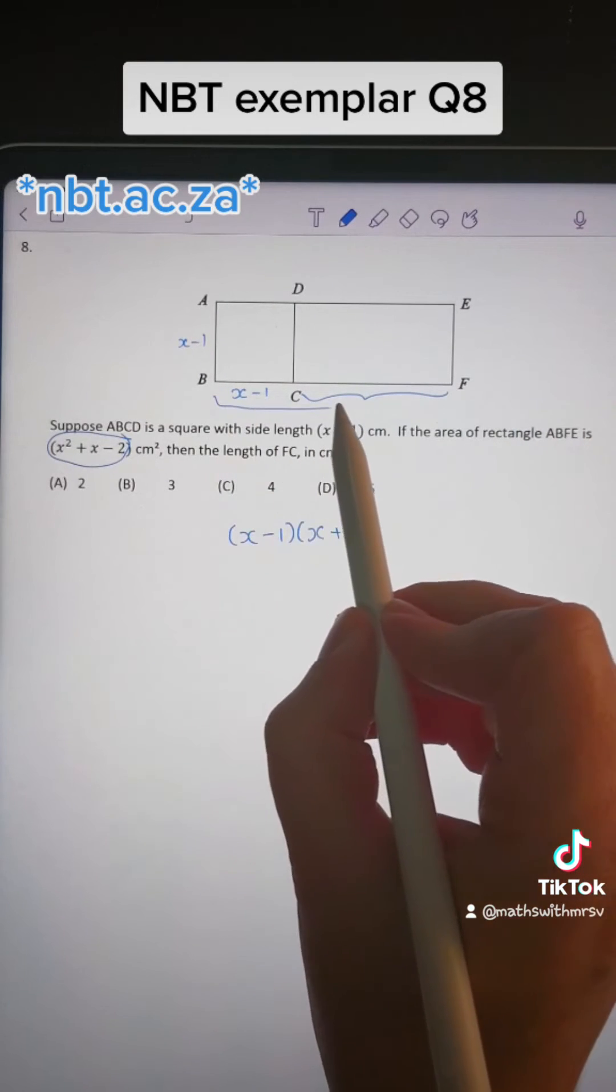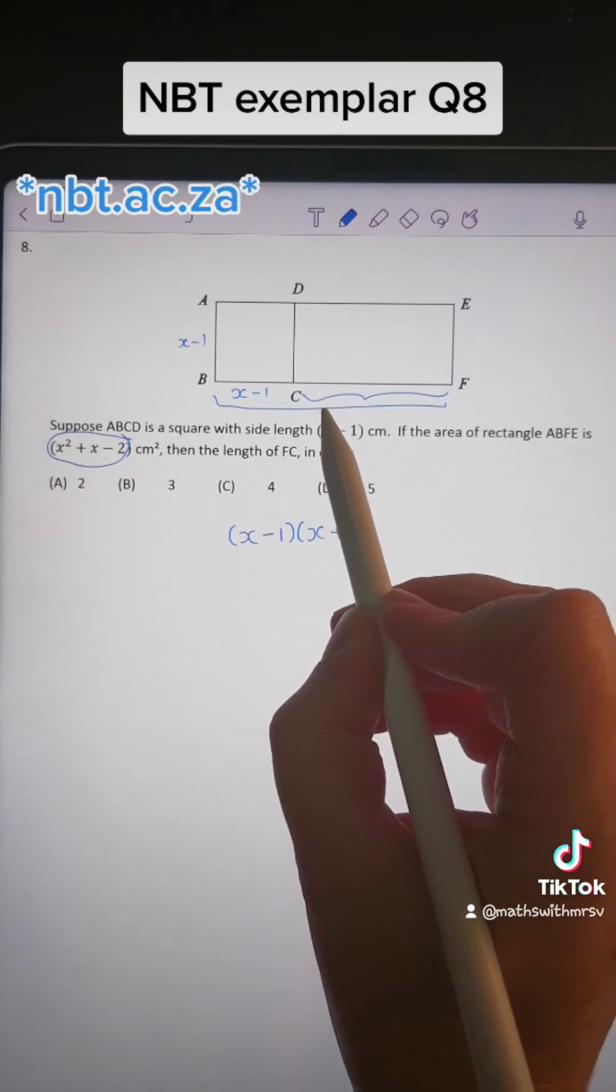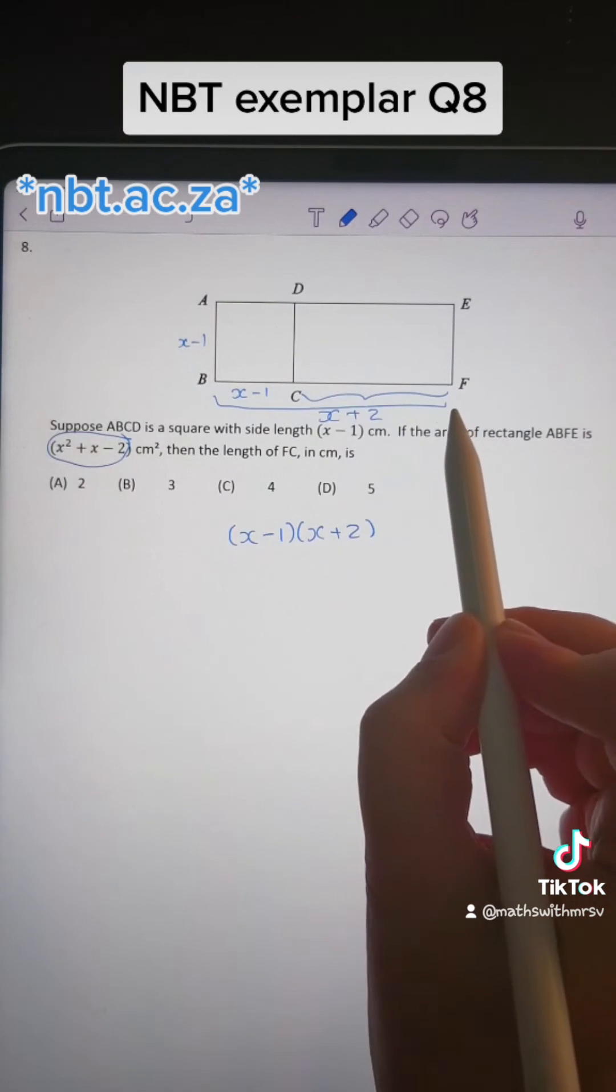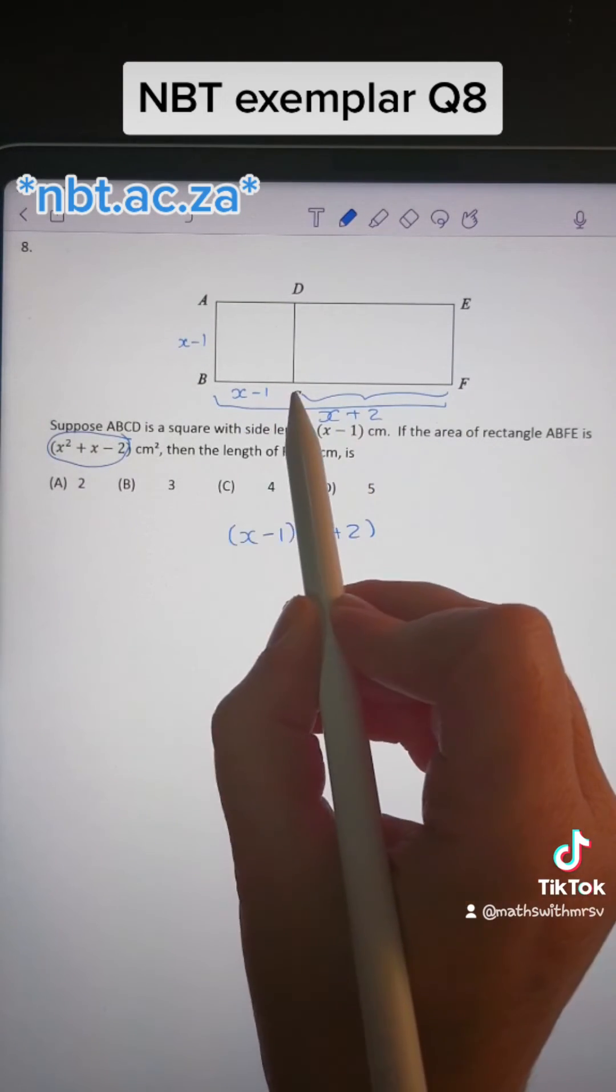The length of the entire side of the big rectangle is going to be x plus 2. In order to work out this part here, we just need to take FB and subtract BC.